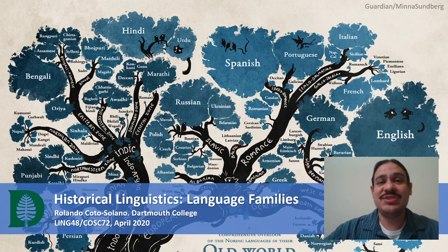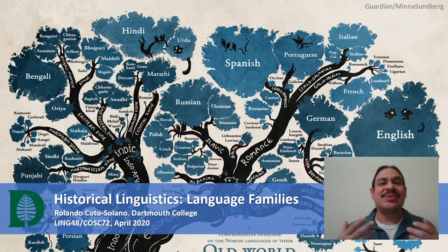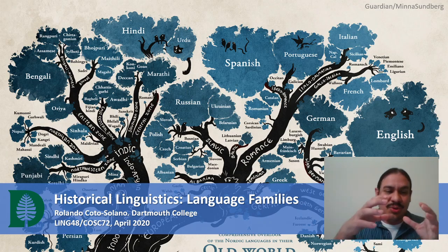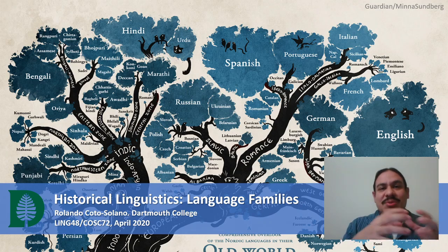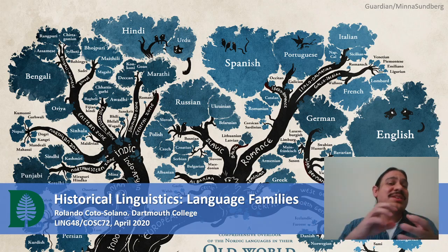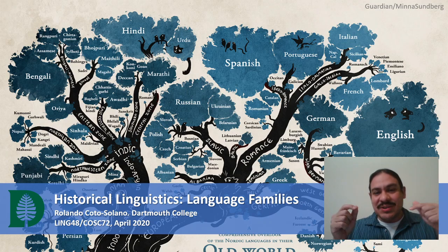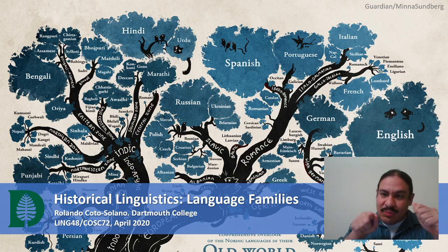This is a very short introduction to the field of historical linguistics, in particular to the idea that languages are grouped into language families. Similar languages like French, Spanish, and Italian are all grouped together precisely because of those similarities. The way we figure out if two languages are similar is by looking at their features and what words look similar amongst them.